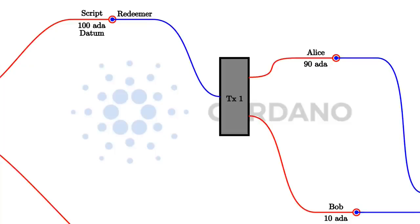So this is the EUTXO model — the Extended Unspent Transaction Output model. It is of course not tied to a specific programming language. We have Plutus, which is based on Haskell, but in principle you could use the same EUTXO concept with a completely different programming language. We also plan to write compilers from other programming languages to Plutus core, which is sort of the assembly language underlying Plutus. The EUTXO model is different from the specific programming language you use — the understanding of the EUTXO model is independently valid from understanding Plutus syntax.